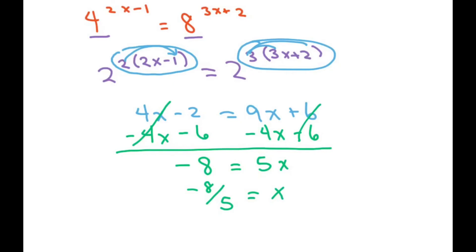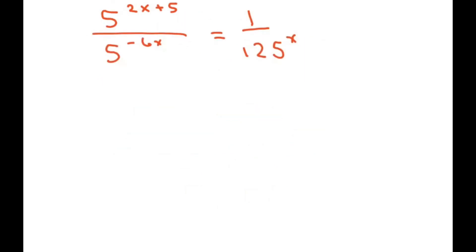Okay, and the last one I have is this one. I want my bases to be 5. I'm going to use my quotient property. I know a to the m over a to the n equals a to the m minus n.